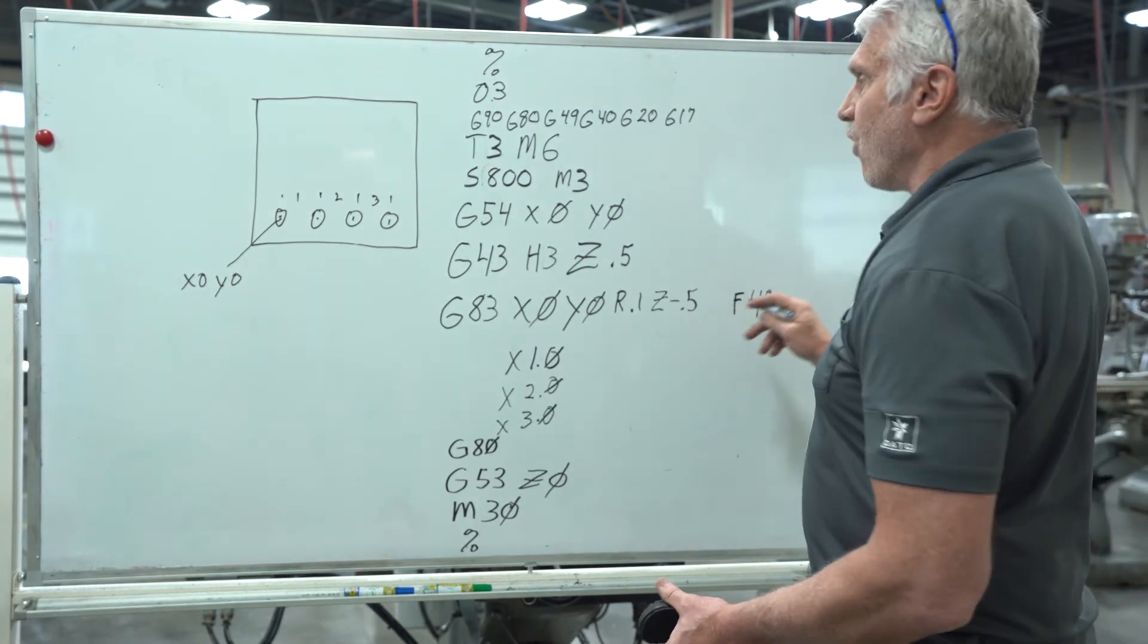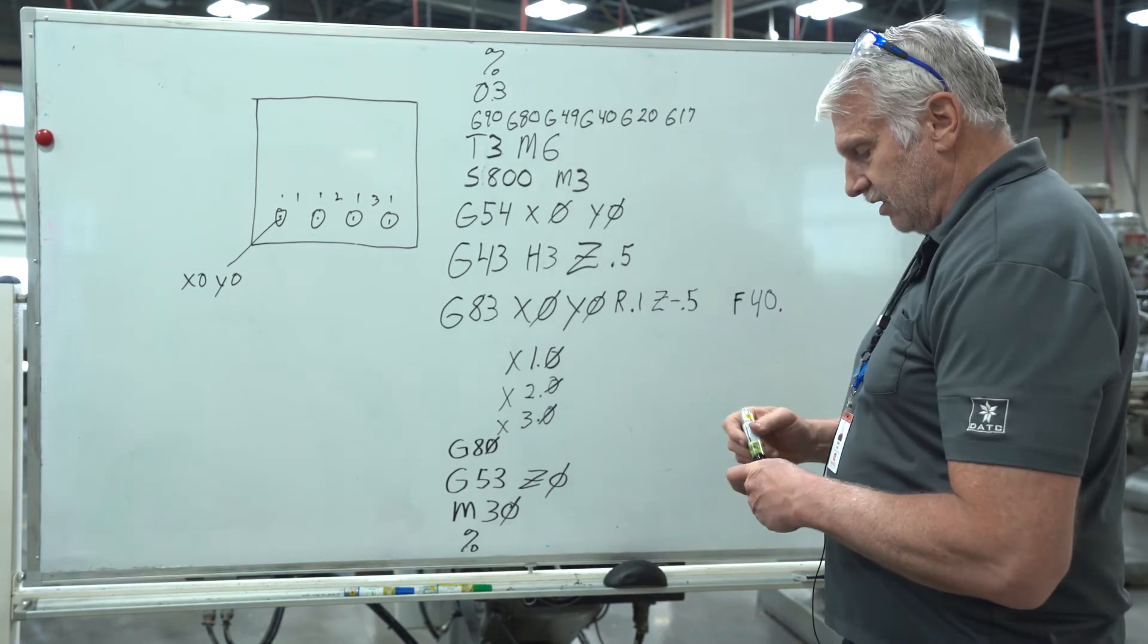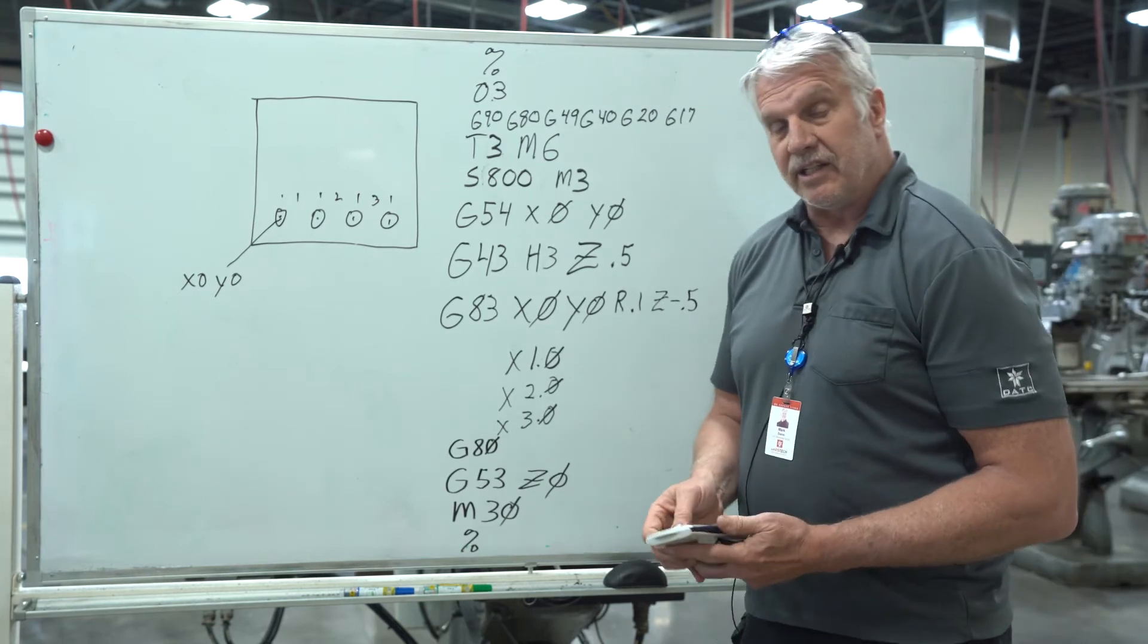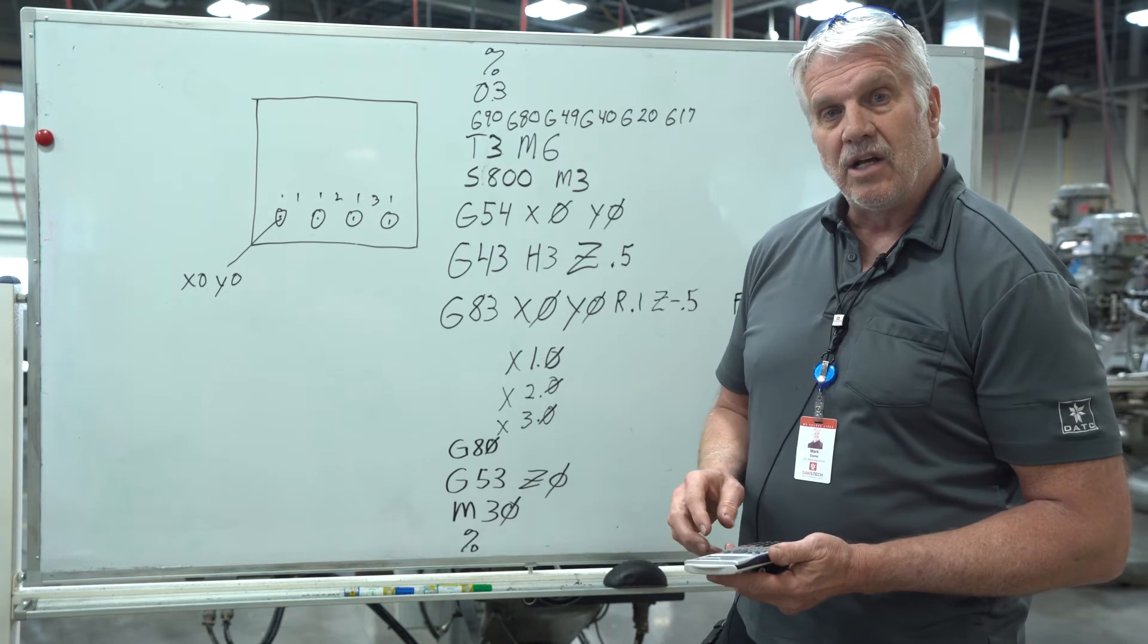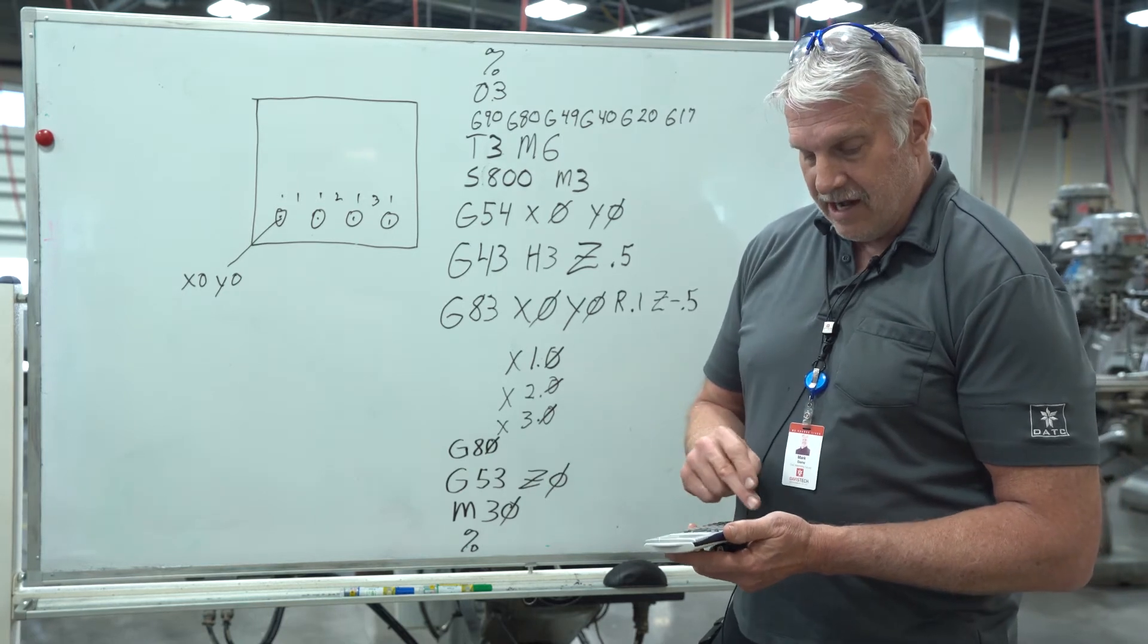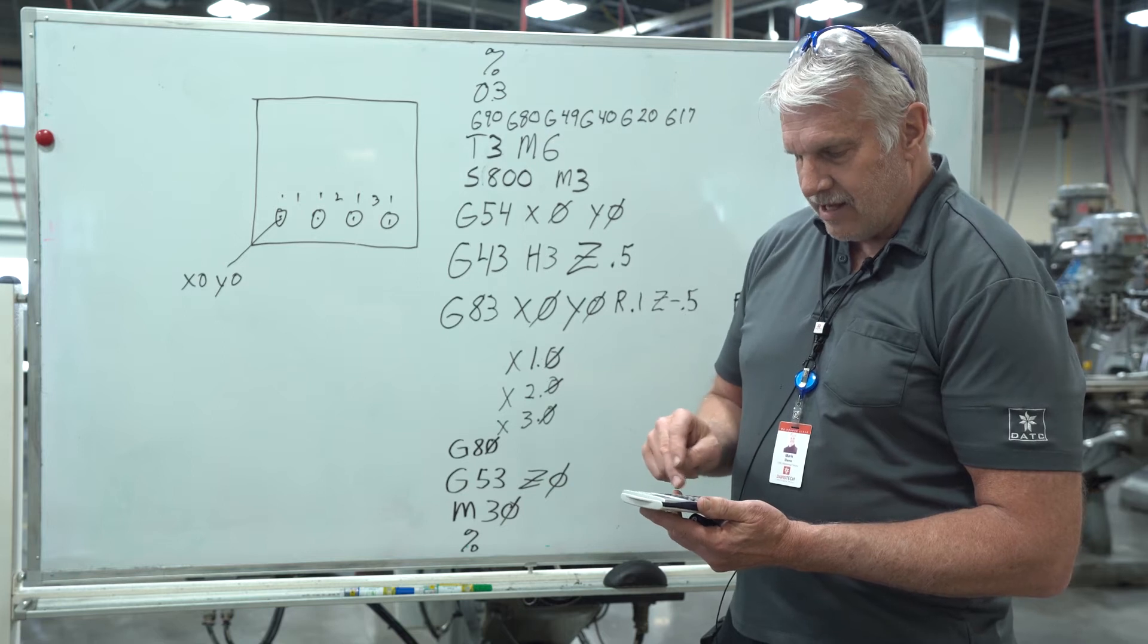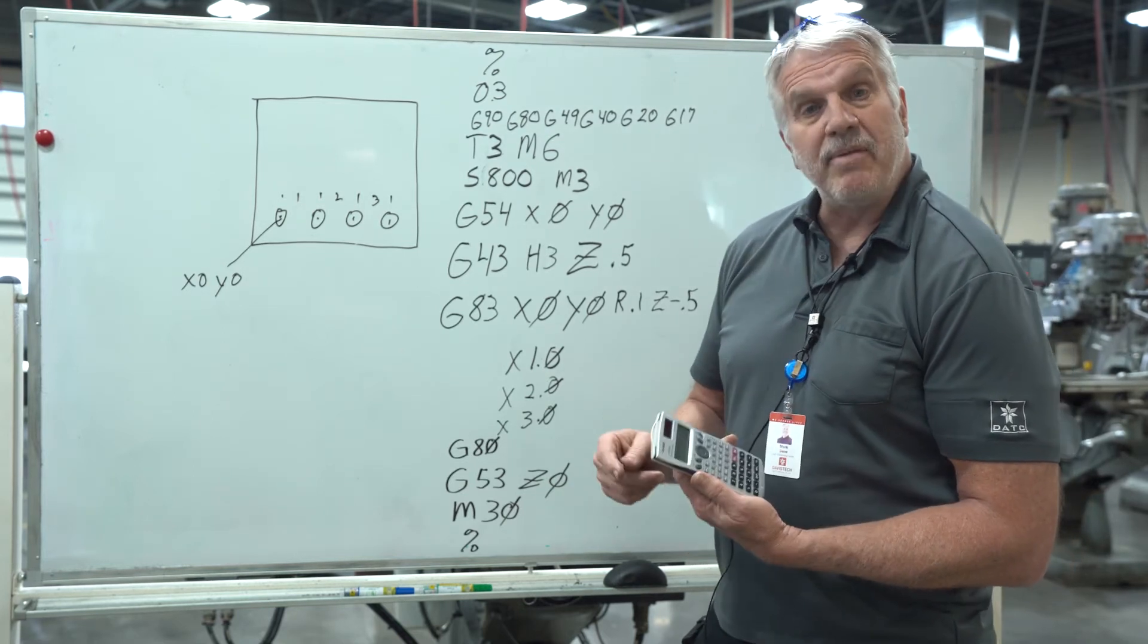Now how did we come up with 40 and 800? The way we did that is we took 800. Now the tap we're going to be using is a quarter 20, in other words there's 20 threads per inch. So I took the number 800 and divided that by 20, which gave me 40.